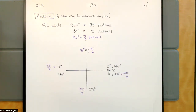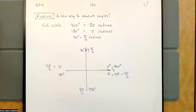So that's counting around the unit circle in multiples of pi over 2: 0 pi over 2, 1 pi over 2, 2 pi over 2, 3 pi over 2, 4 pi over 2. If we cut this in half again, we'll see that 45 degrees is pi over 4 radians.